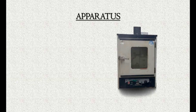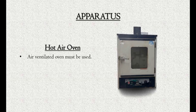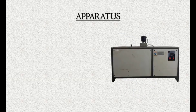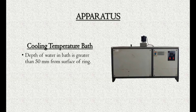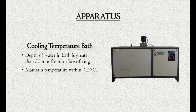Apparatus: Hot air oven — an air-ventilated oven must be used with a range up to 150 degrees Celsius. Cooling temperature bath — depth of water in bath must be greater than 50 mm from the surface of the ring, and temperature must be maintained within 0.02 degrees Celsius.